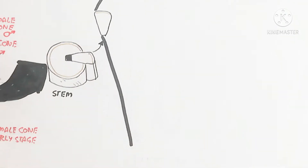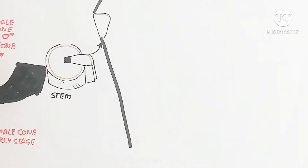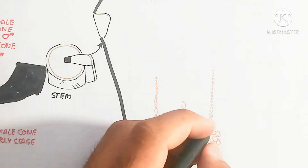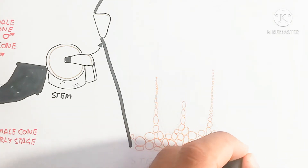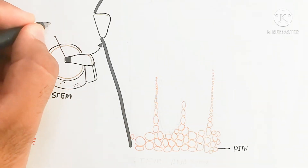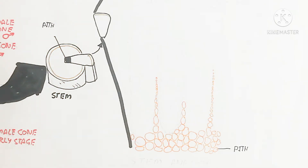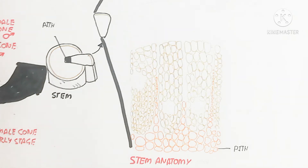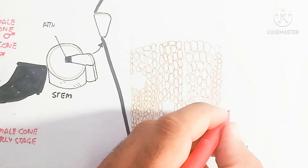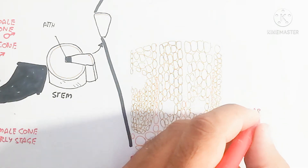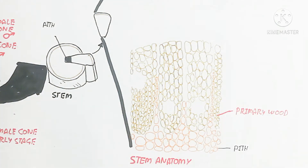Now let's go from inside to outside. Here is the pith — the innermost part which stores material. Outside the pith is the primary wood, which is basically made up of xylem. The xylem is made up of cellulose, which is a polysaccharide made of glucose molecules.